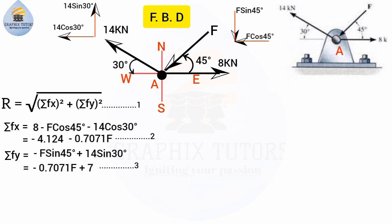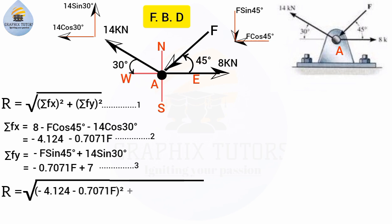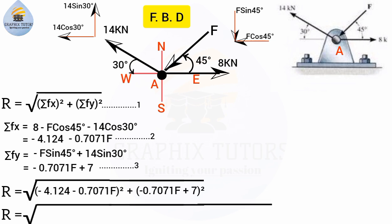We've now obtained ΣFx and ΣFy. Substituting equations two and three into equation one, the resultant force R equals the square root of (ΣFx)² + (ΣFy)², which gives the square root of (−4.124 − 0.7071F)² plus (−0.7071F + 7)². Now I'll expand this expression.